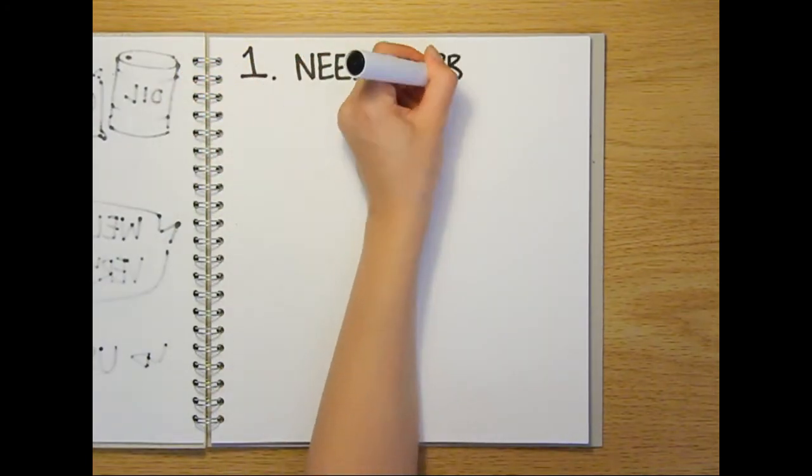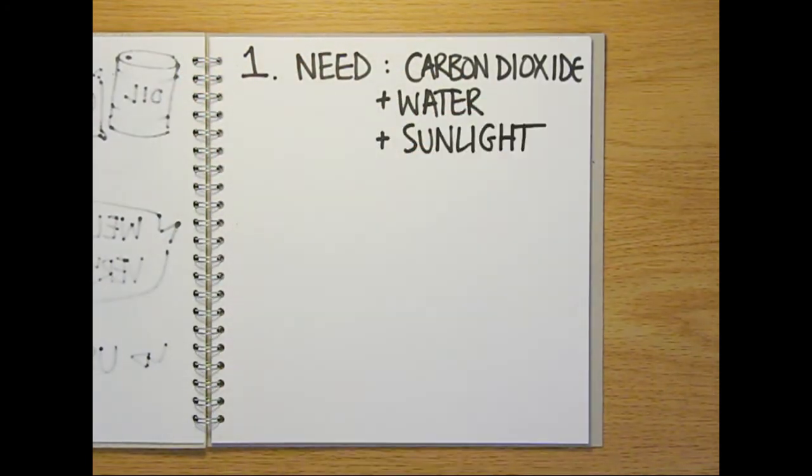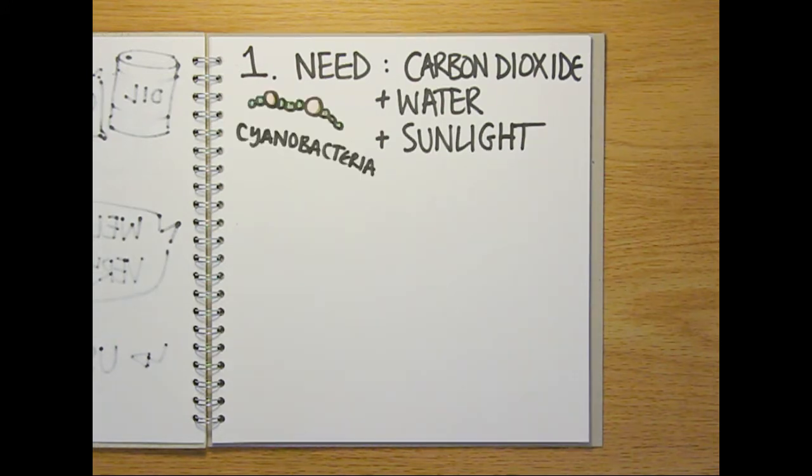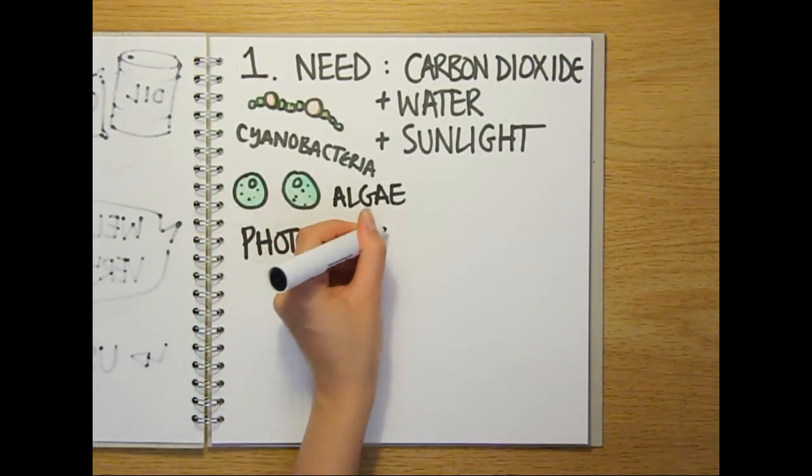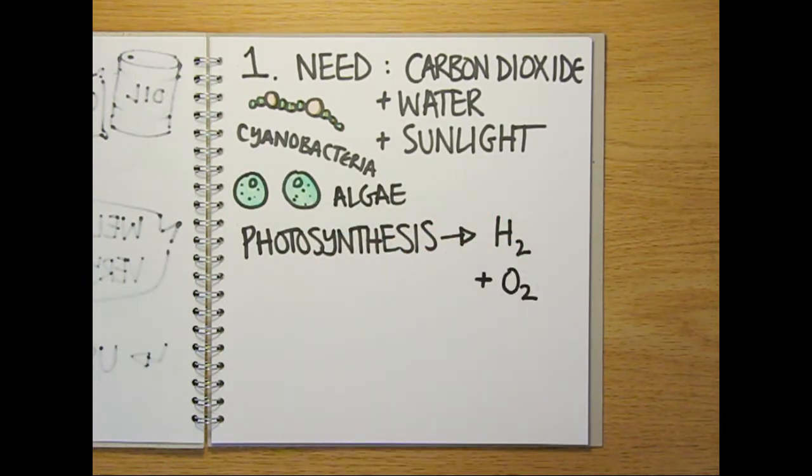The first requires carbon dioxide, water and sunlight. These are supplied to photosynthesizing microbes like cyanobacteria and algae. During photosynthesis, these microbes produce hydrogen and oxygen by using sunlight to split water.